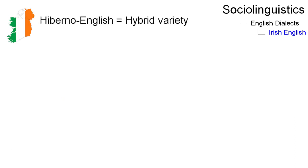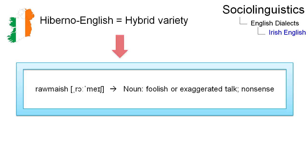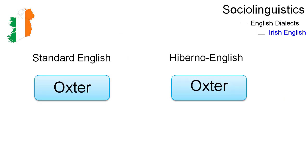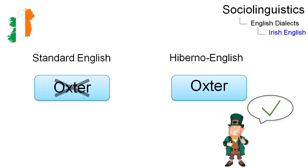Hiberno English is thus a hybrid dialect and it is full of borrowings from the Irish language, as you can see here. Additionally, Hiberno English employs words that have long been out of use in Standard English. 'Oxster', for example, disappeared from Standard English around 1800 but is still in use in Ireland.